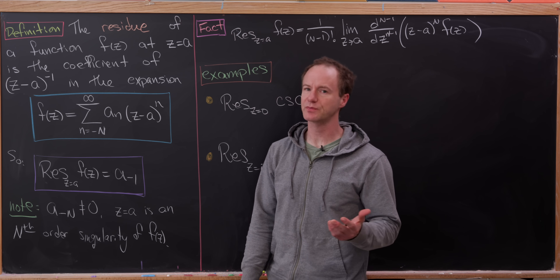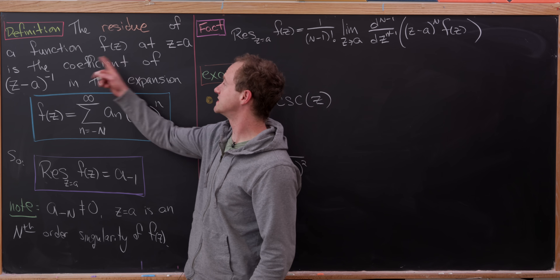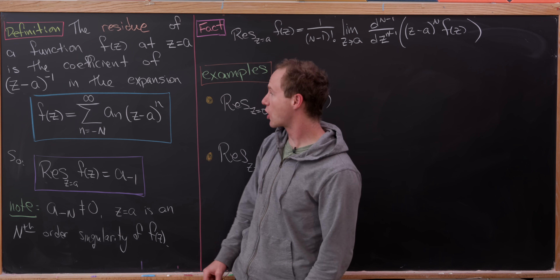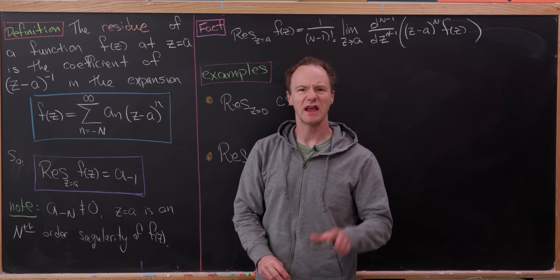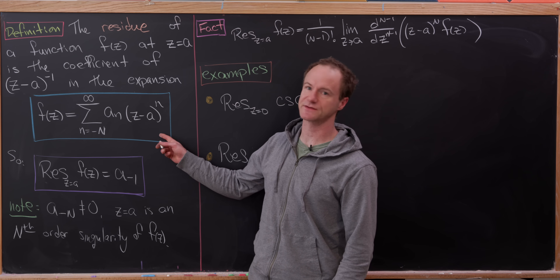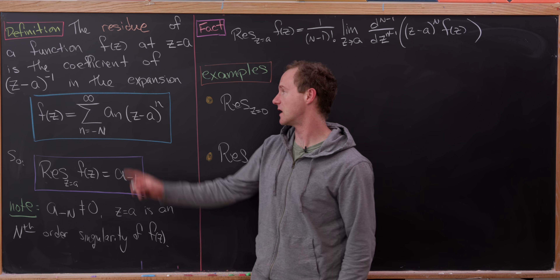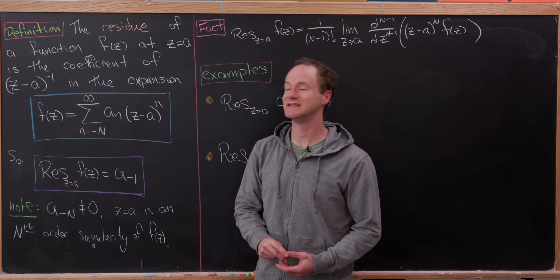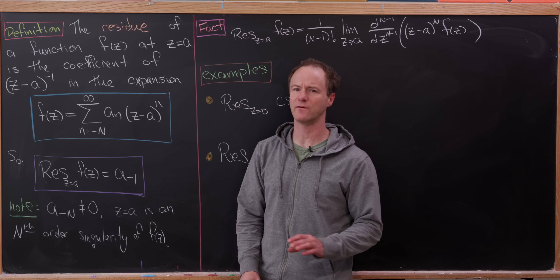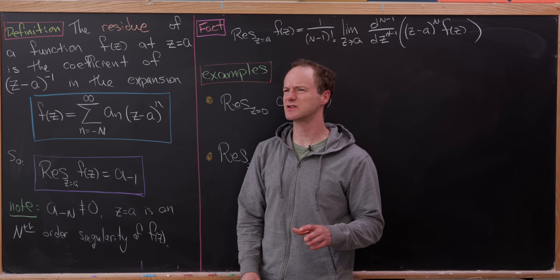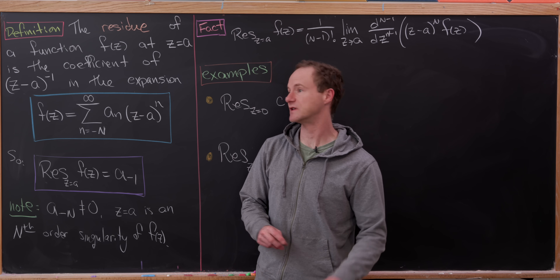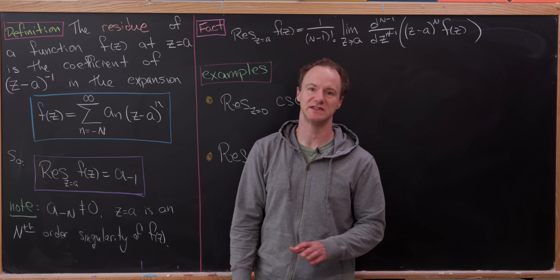But before we do that we should probably recall what a residue is. The residue of a function f(z) at a complex number a is simply the coefficient of (z minus a) to the negative one in the Laurent series expansion of the function, which can be written as the sum as n goes from negative N up to infinity of a_n times (z minus a) to the n. These coefficients can be calculated via a formula — it's similar to the way you calculate coefficients for a Taylor series, just adjusted to account for the negative powers of (z minus a).